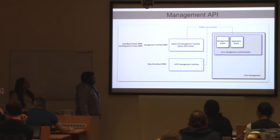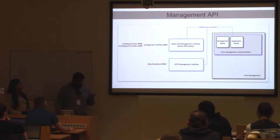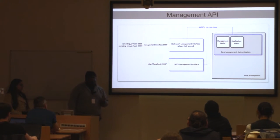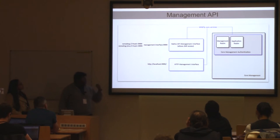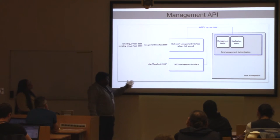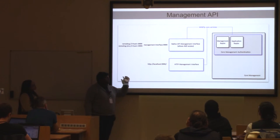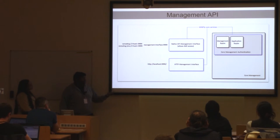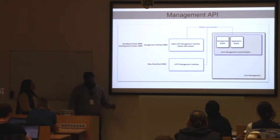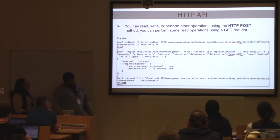By default, WildFly exposes its management API. The management API allows you to do configuration changes and deployments — just like you can do with the management console. By default, it is exposed using two APIs: the native API and the HTTP API. You can use any HTTP client like a web browser to do configuration changes, or if you are a Java developer, you can use the native API, connecting directly via remoting or remote JMS protocol.